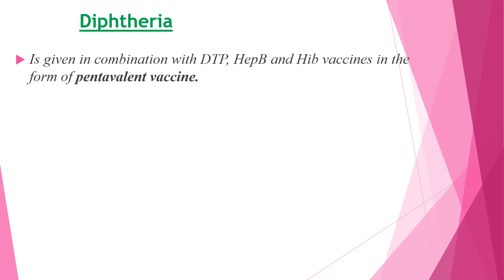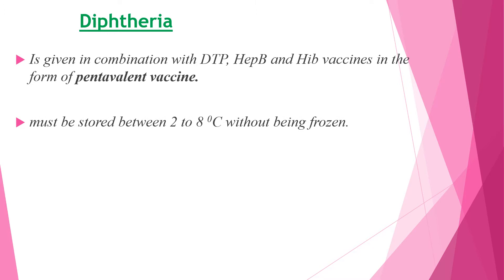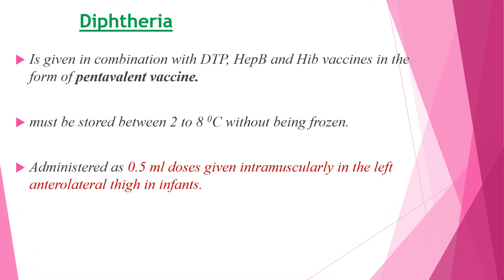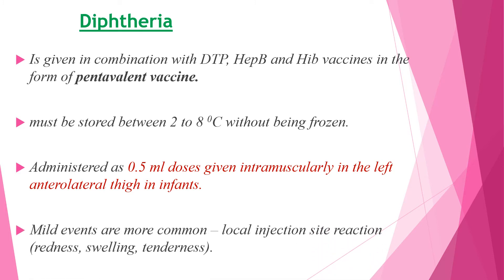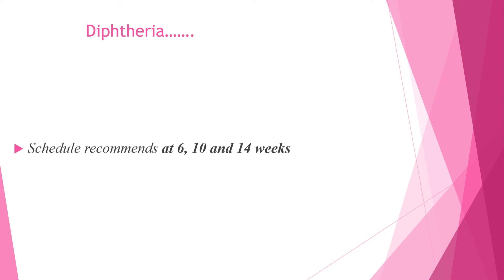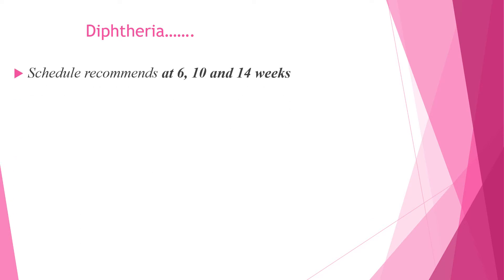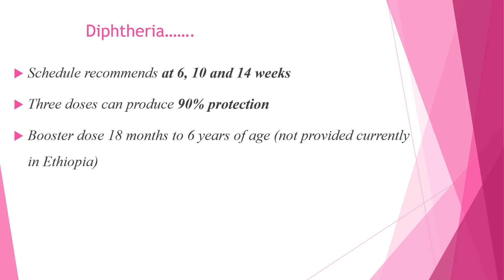The pentavalent vaccine must be stored between two to eight degrees Celsius without being frozen. It is administered as 0.5 ml doses given intramuscularly in the left anterolateral thigh of infants. Mild events are more common, such as local injection site reactions including redness, swelling, and tenderness. It is given at six weeks, 10 weeks, and 14 weeks of age. Three doses can produce 90 percent protection. The booster dose is given at 18 months to six years of age but is not currently provided in Ethiopia.